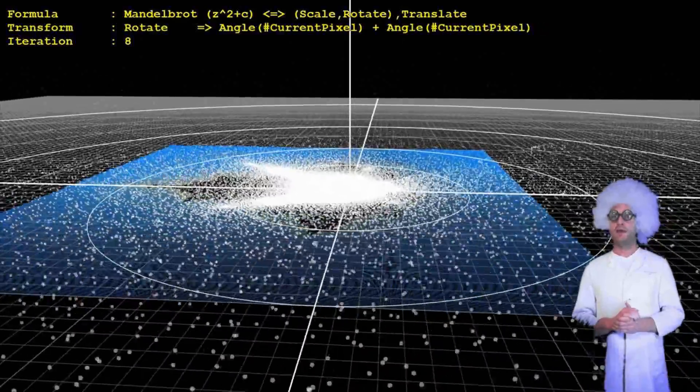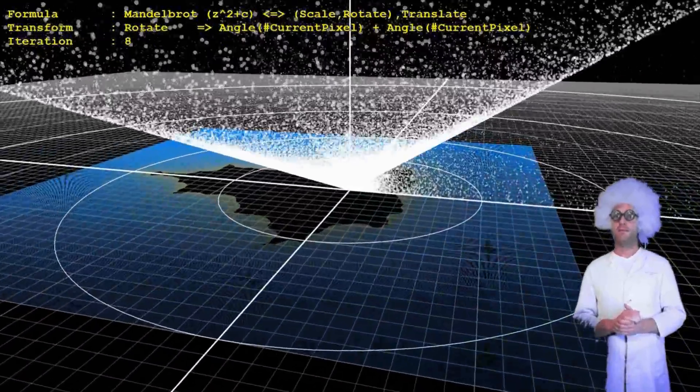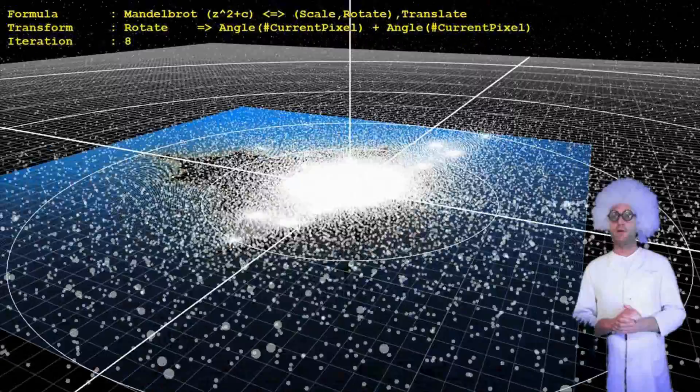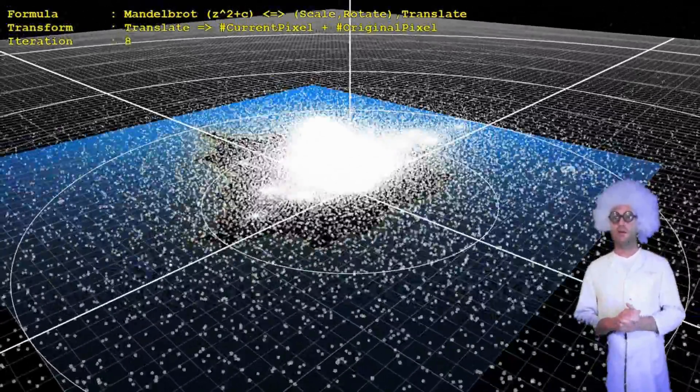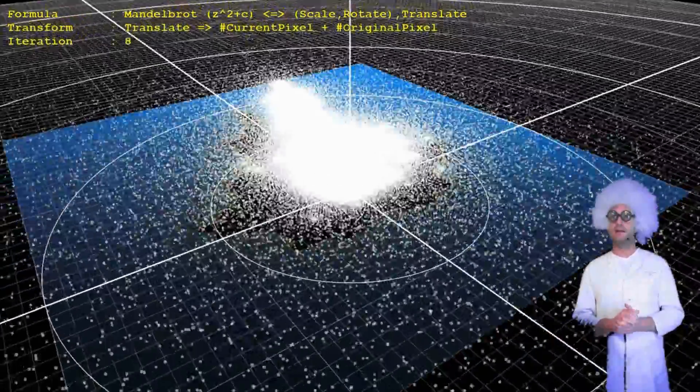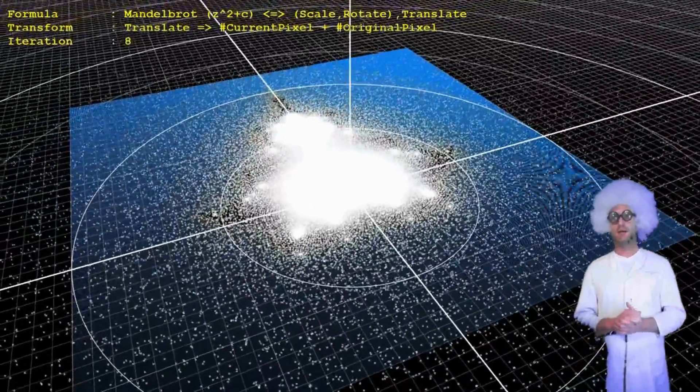The complex squaring doubles the angles. This has the effect that points on the positive x-axis do not move at all, and points on the negative x-axis rotate by 180 degrees.